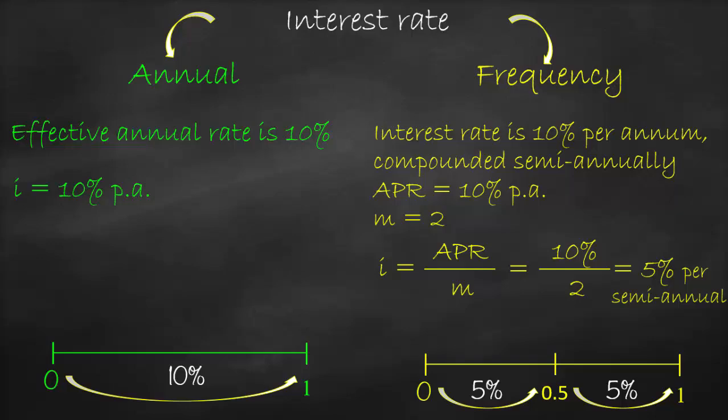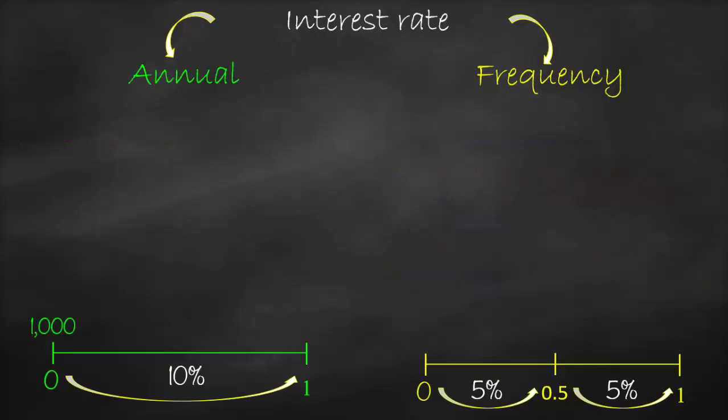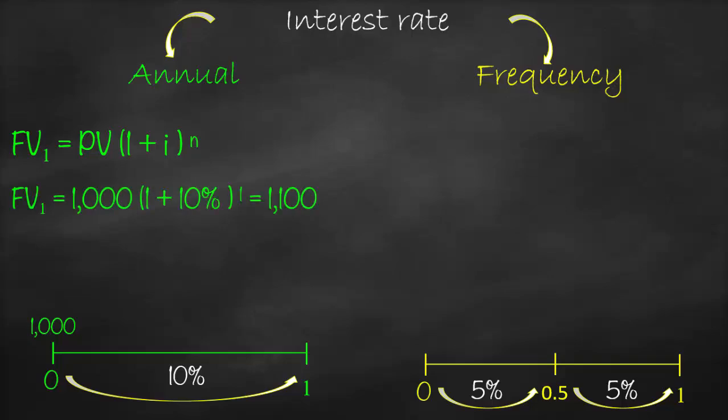Which gives a higher value: receiving 10% as an effective annual rate, or receiving 5% in the first half-year and another 5% in the second half? Let's assume we deposit $1,000 at time zero and calculate the future value at year one. Future value equals present value multiplied by (1 + i) to the power n. So: FV = 1,000 × (1 + 10%)^1 = $1,100.